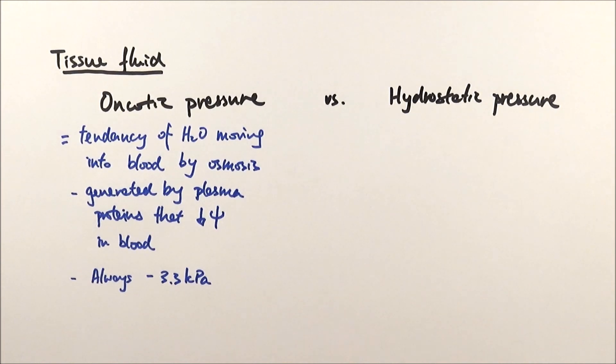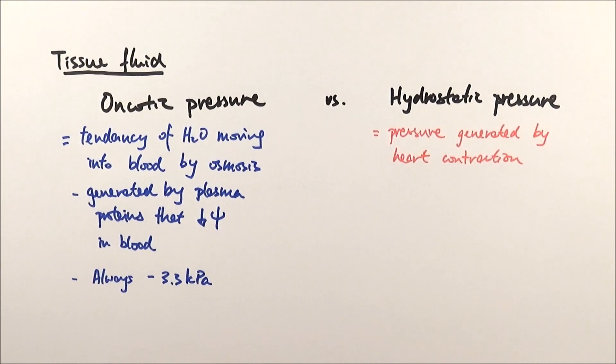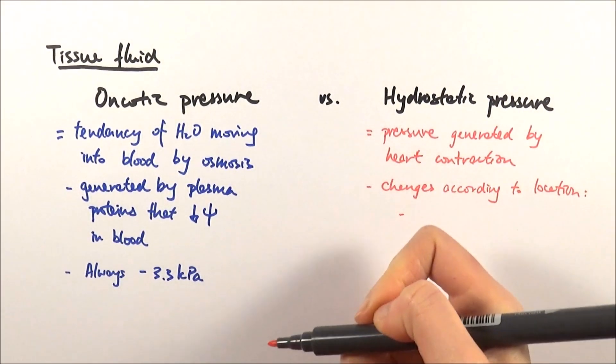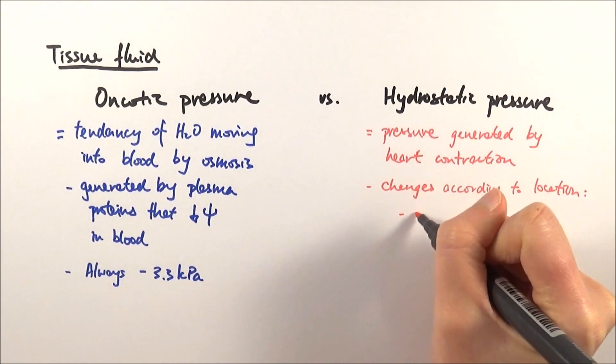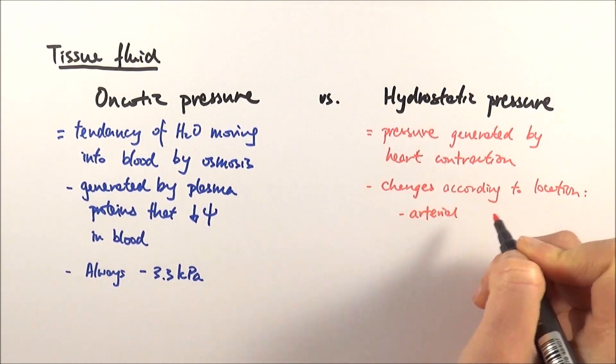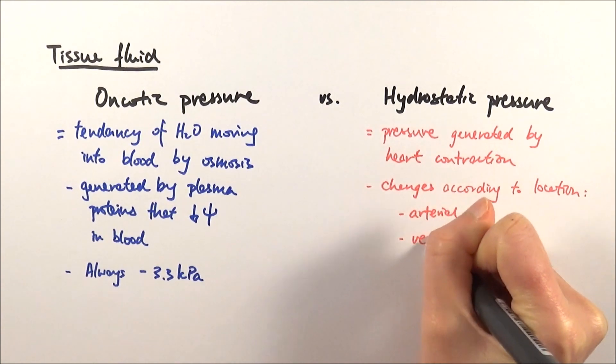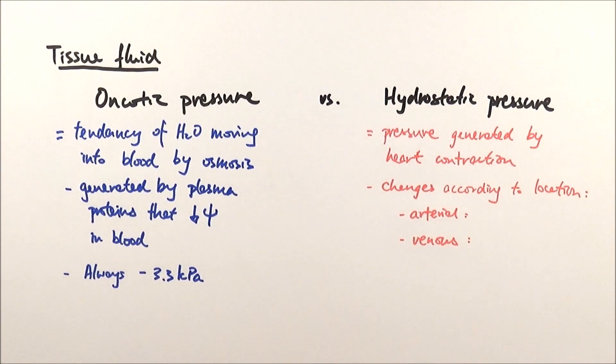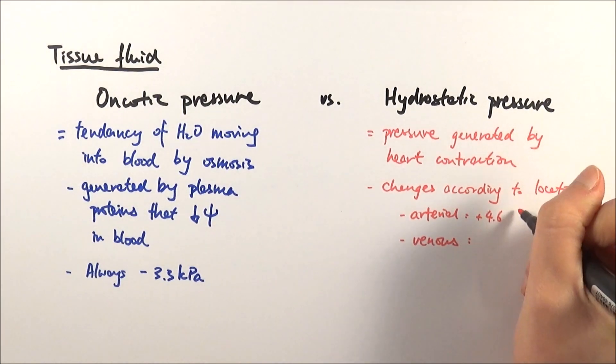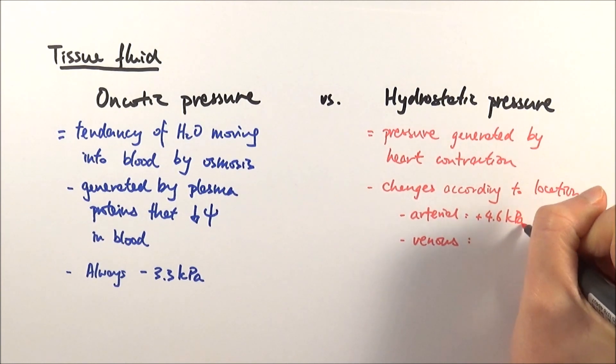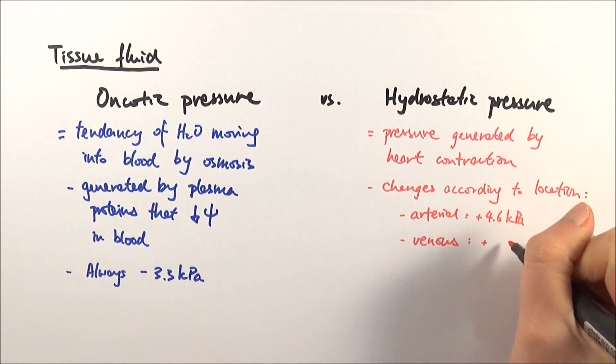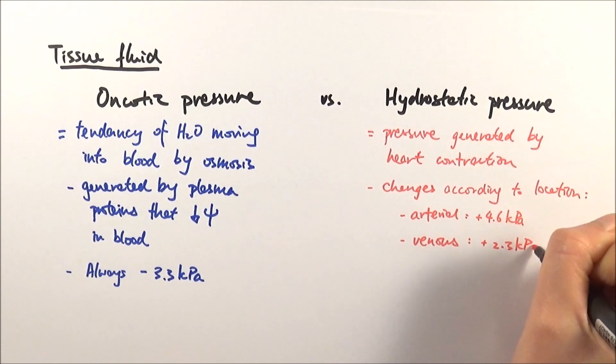Hydrostatic pressure is basically blood pressure. Because it's generated by heart contraction, it changes according to location. Tissue fluid is formed in the capillaries, so we can consider the arterial end where blood enters and the venous end where blood is leaving, going back into the veins to the heart. At the arterial end it's plus 4.6 kPa, and at the venous end it's plus 2.3 kPa.